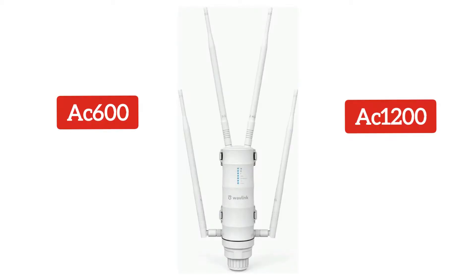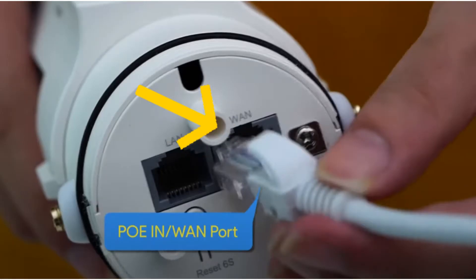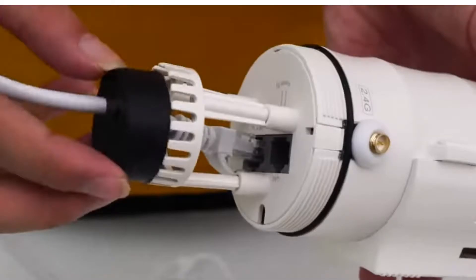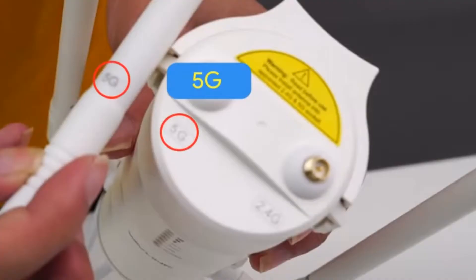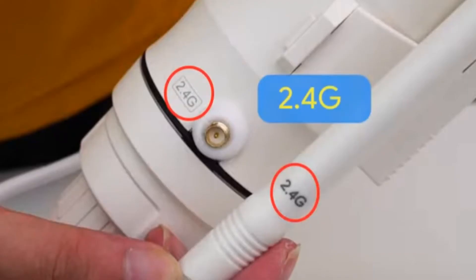To start, first plug the ethernet cable into the WAN port and screw the bottom cap. Make sure to screw all four antennas—the 5 GHz antennas should be screwed in the 5 GHz slots and the 2.4 GHz antennas in the 2.4 GHz slots.